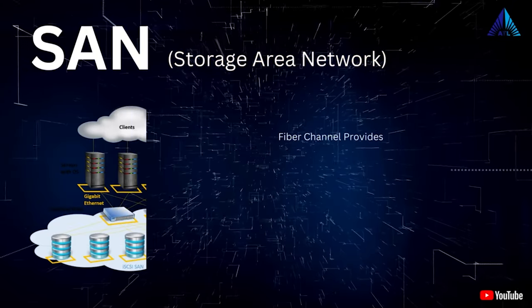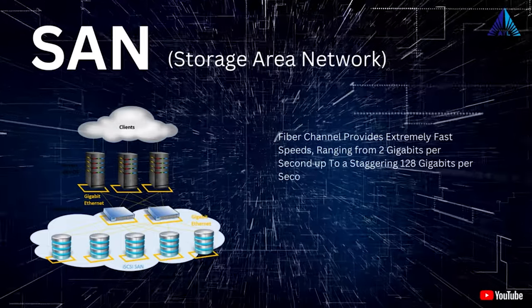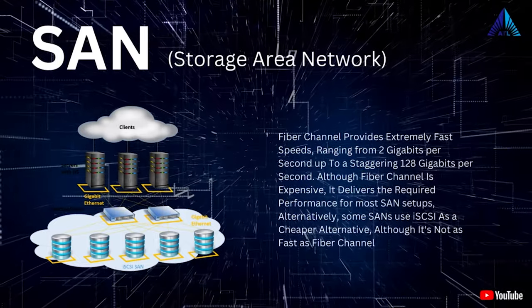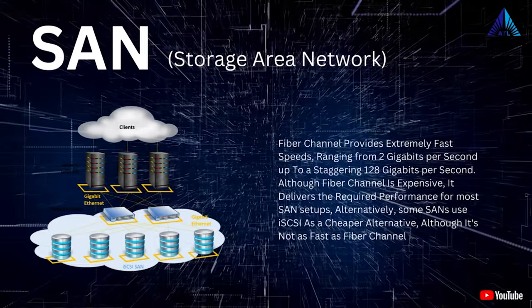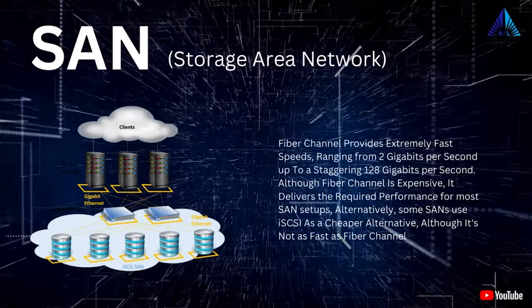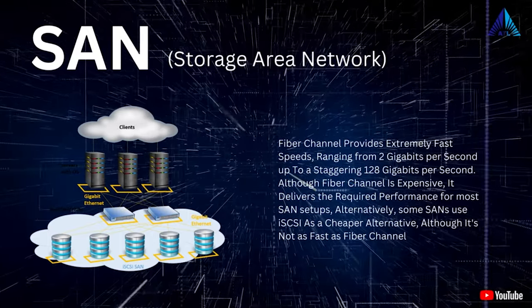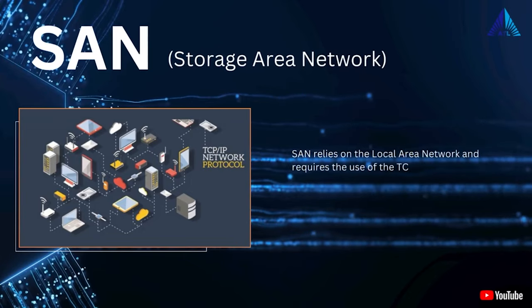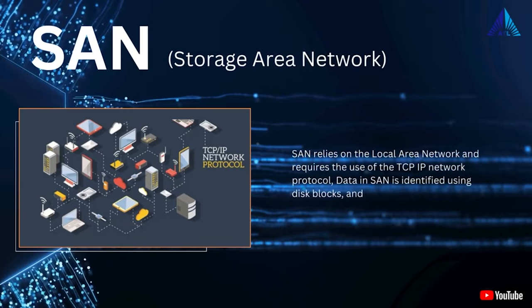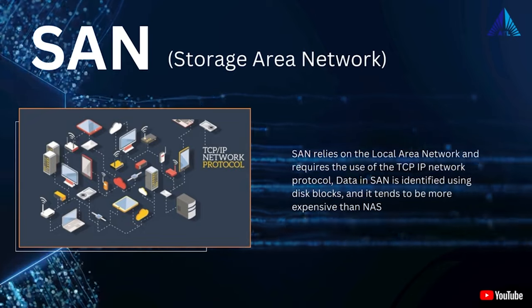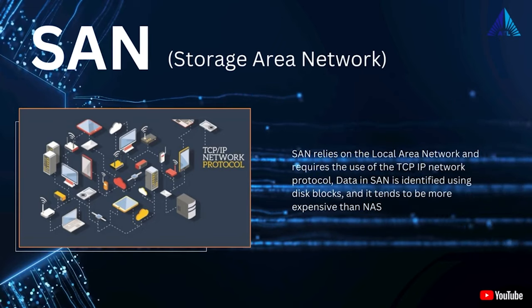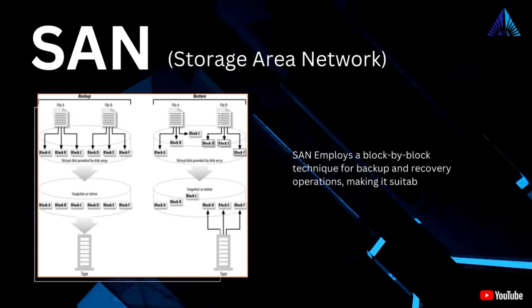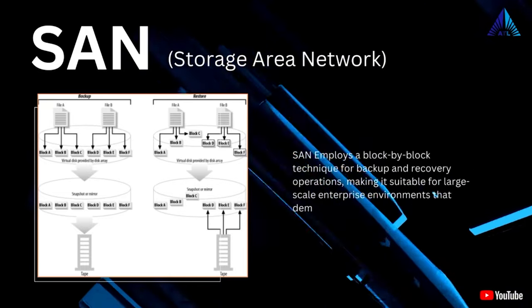Fiber Channel provides extremely fast speeds, ranging from 2 Gbps up to 128 Gbps. Although Fiber Channel is expensive, it delivers the required performance for most SAN setups. Alternatively, some SANs use iSCSI as a cheaper alternative, although it's not as fast as Fiber Channel. SAN relies on the local area network and requires the use of the TCP/IP network protocol. Data in SAN is identified using disk blocks, and it tends to be more expensive than NAS. SAN employs a block-by-block technique for backup and recovery operations, making it suitable for large-scale enterprise environments that demand high performance and reliability.